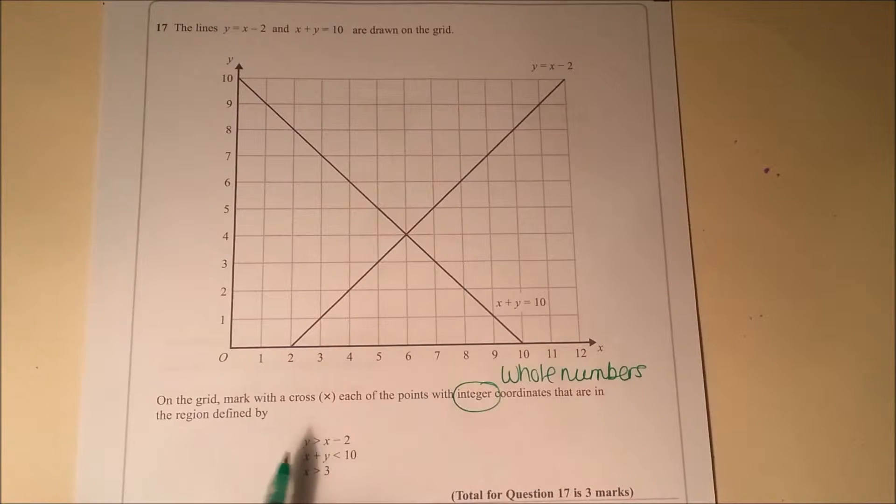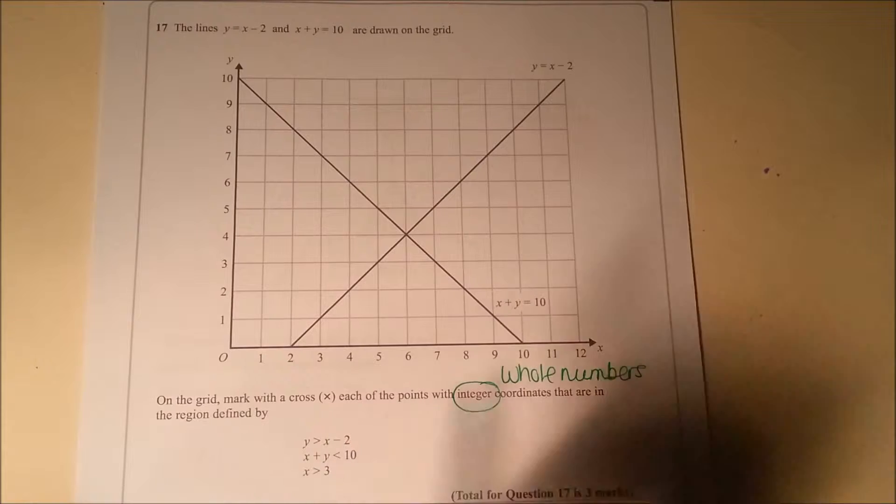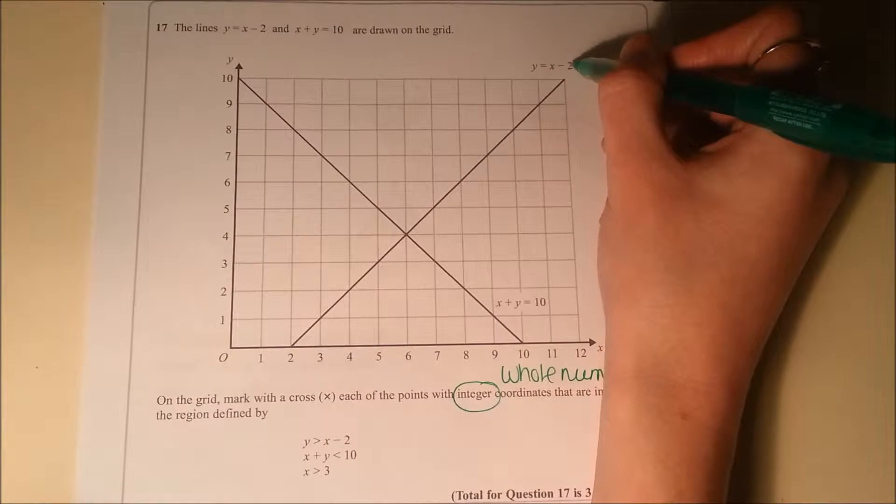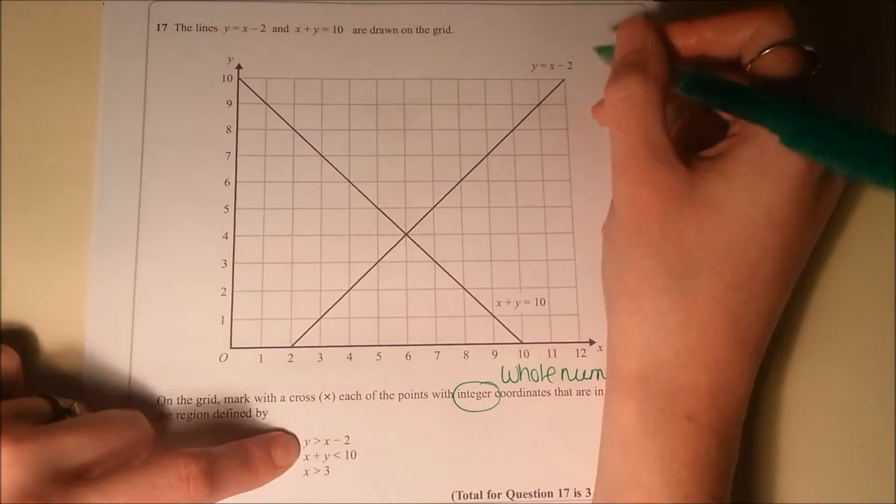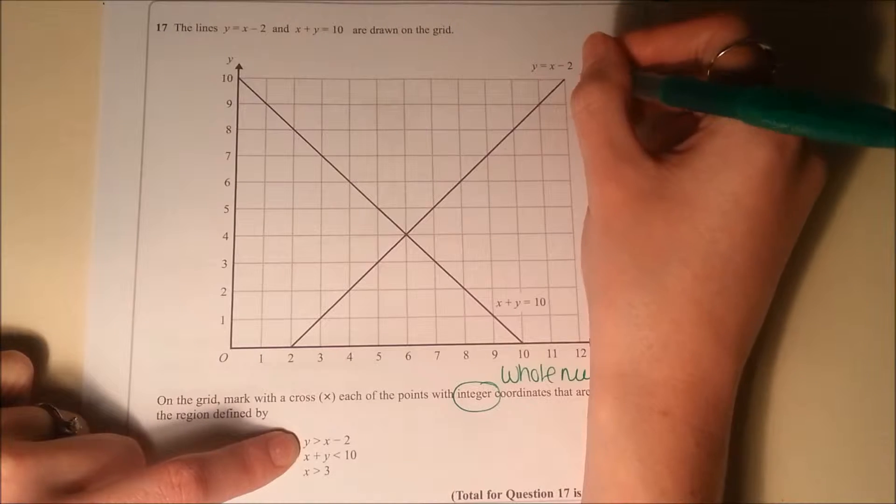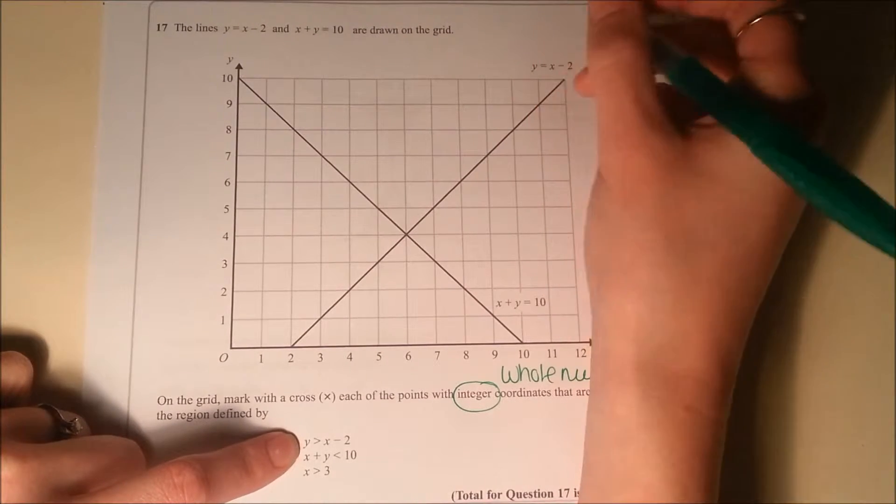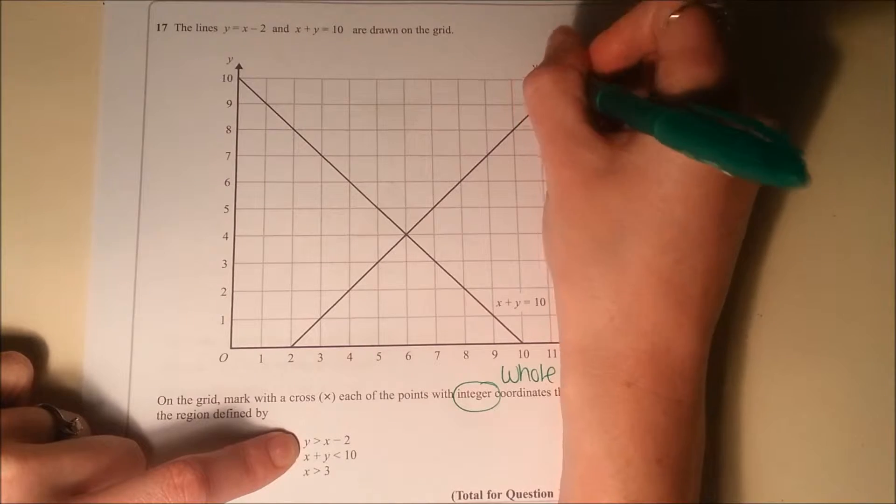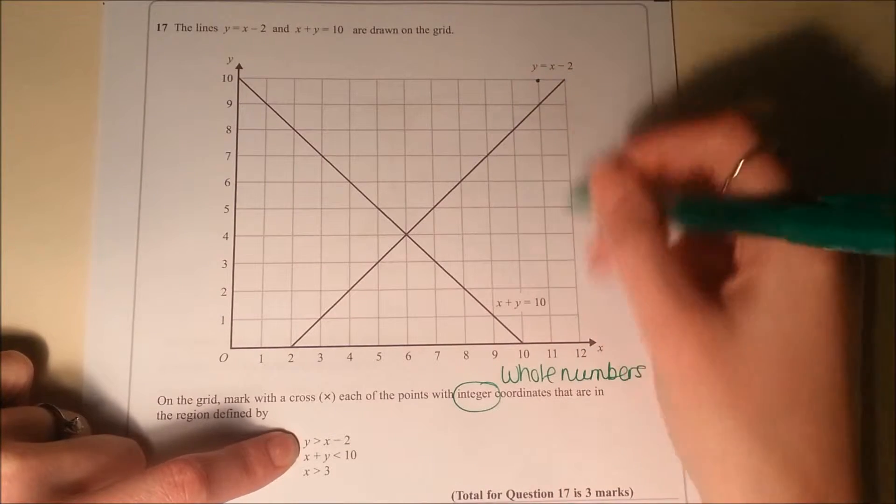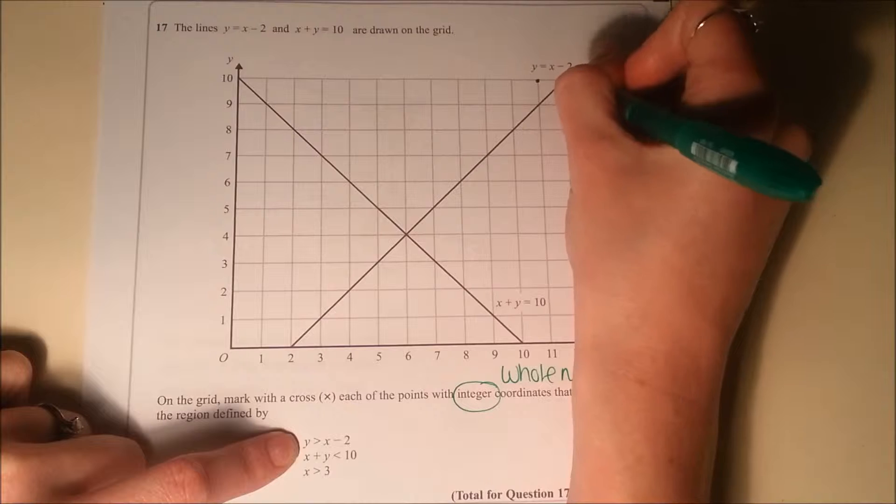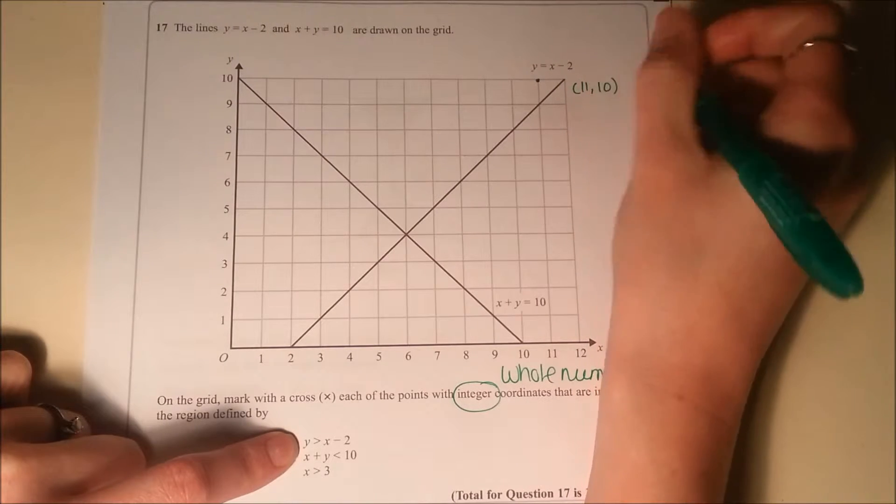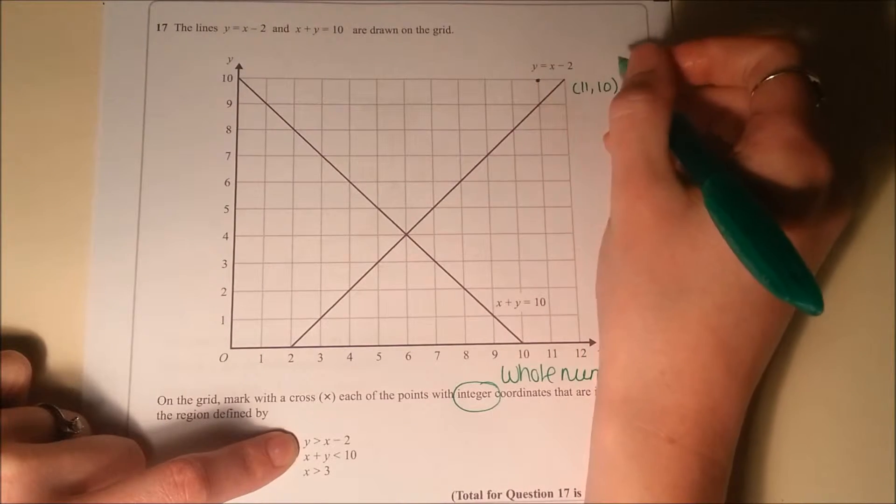So first of all, y is greater than x minus 2, so that's the line y equals x minus 2. We need to find out where y is greater than x minus 2, and the best way of doing that is probably to pick a point, so let's try the point. What point's this? That's the point 11, 10, and test that rule.